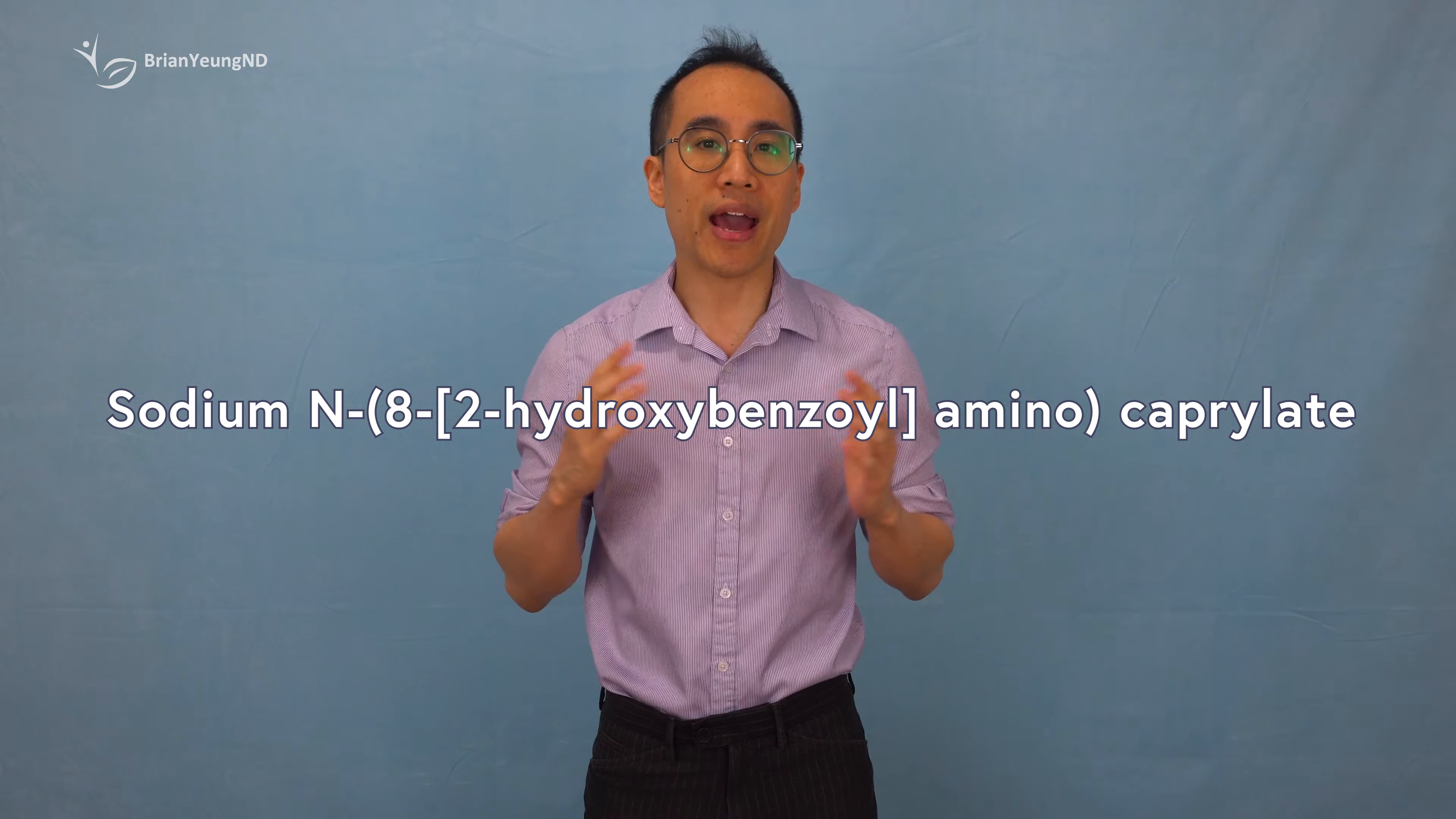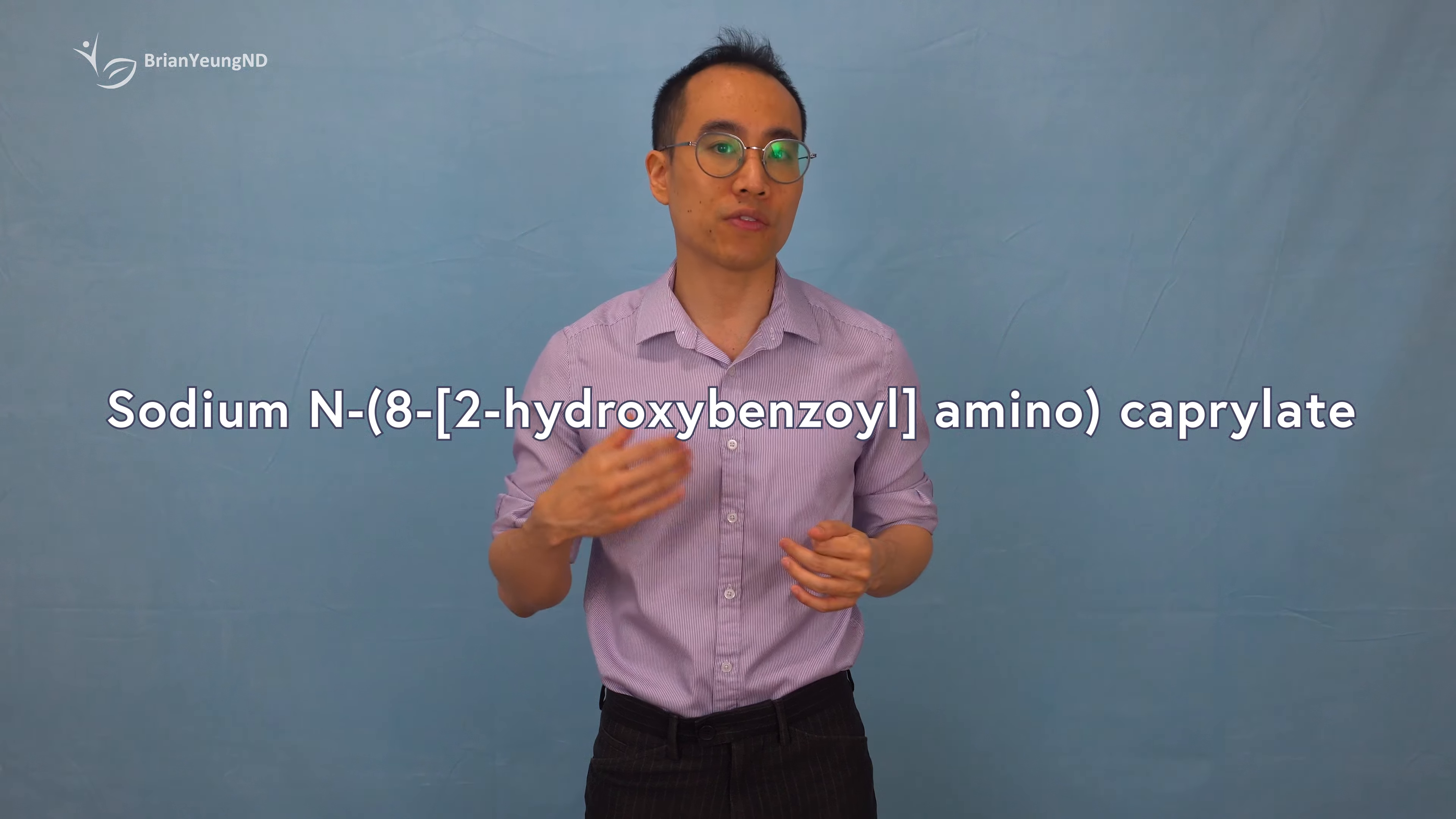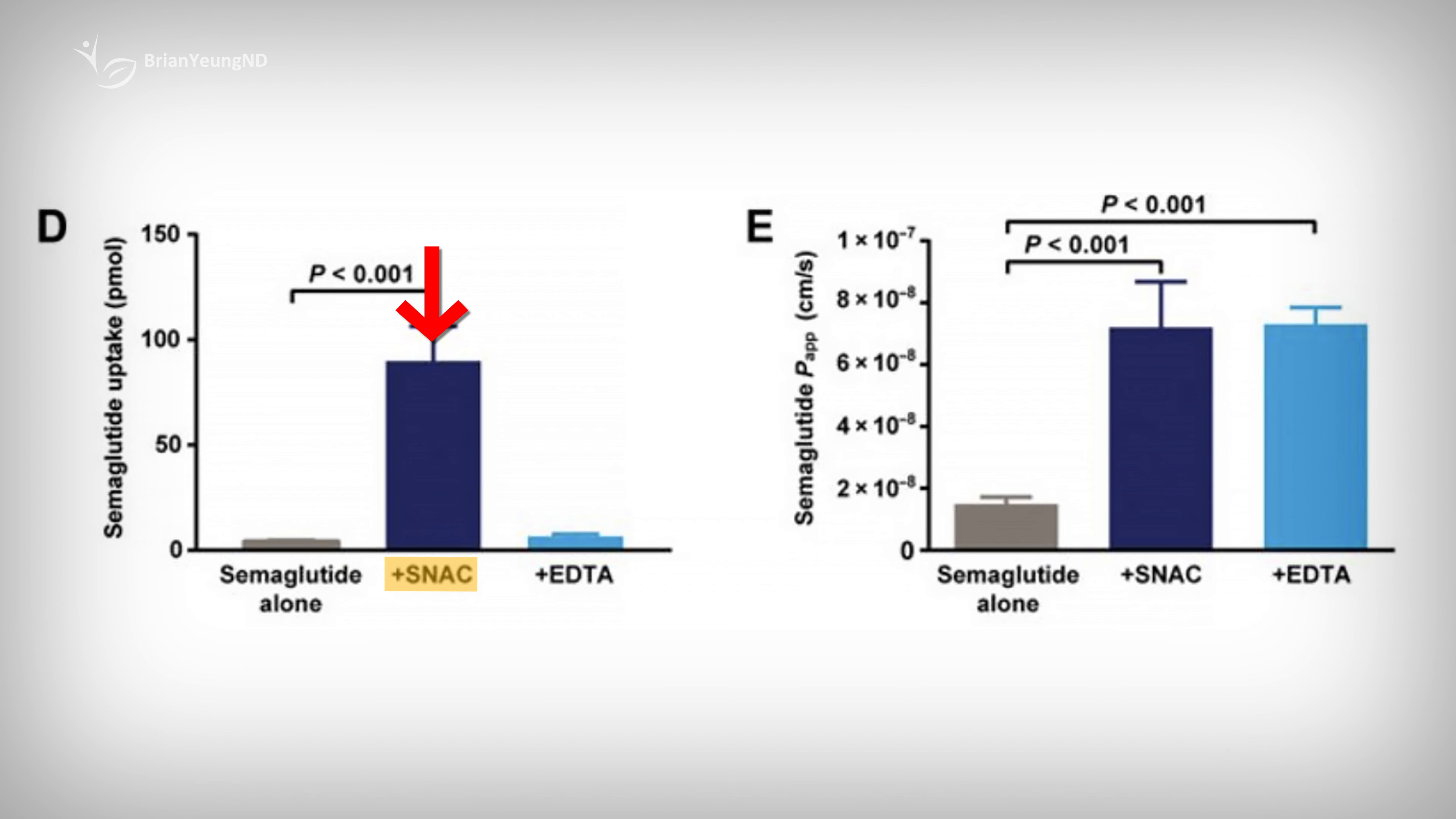The answer lies in a compound called SNAC. SNAC acts as an absorption enhancer, protecting semaglutide from the harsh gastric environment and aiding its absorption through the stomach lining. Studies show that SNAC significantly improves the absorption of oral semaglutide into the bloodstream compared to taking semaglutide without it.